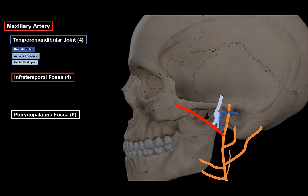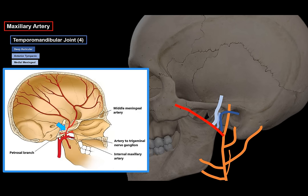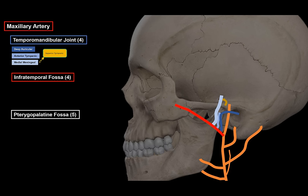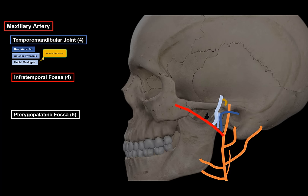The middle meningeal artery enters the middle cranial fossa through the foramen spinosum to supply a large area of the meninges. It also gives off a superior tympanic branch for the middle ear. The middle meningeal artery is clinically very important — most direct skull traumas lead to an epidural hematoma due to rupture of the middle meningeal artery, causing a severe headache. Remember it originates from the maxillary artery, behind the temporomandibular joint, entering the skull through foramen spinosum.